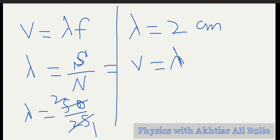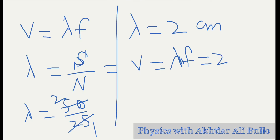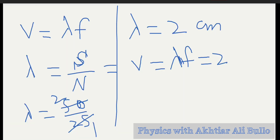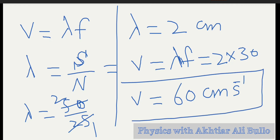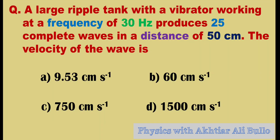Lambda is 2 centimeters and frequency is 30 Hertz, so 2 multiplied by 30 gives a wave velocity of 60 centimeters per second. Therefore, the correct option is b) 60 centimeters per second.